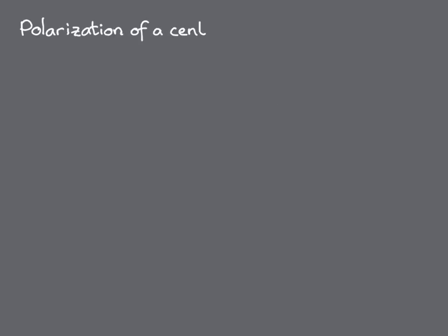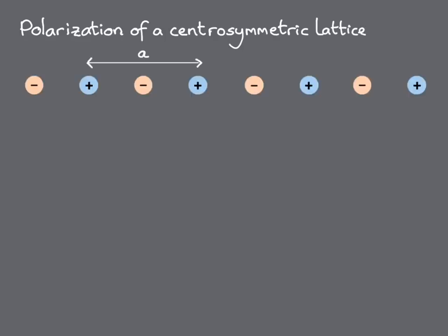First, a reminder of what we learned in Module 2 about the polarization of a centrosymmetric lattice. We considered this one-dimensional crystal lattice in which the anions and cations are evenly spaced, so that both are centers of inversion. We set the charges on the ions to plus and minus the electronic charge, and the unit cell length to a. Then we calculated the polarization, defined to be the dipole moment per unit length, for different choices of unit cells.